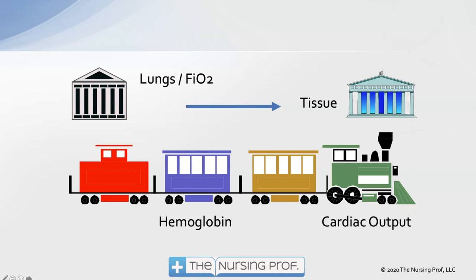If the need at the tissue was for twice as much as we brought, then we're still not meeting the need. We call this the ventilation perfusion train, and hopefully we're balancing the right side — the tissue oxygen consumption — with all of the components that bring the oxygen to the tissues. Let's take a look at each one of those components and talk about how we're going to get oxygen to the tissues and make sure our delivery is meeting the consumption.